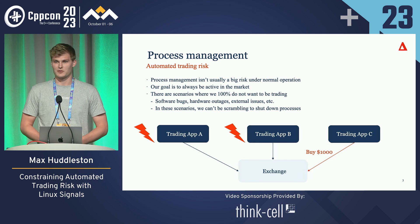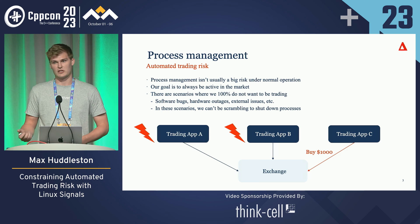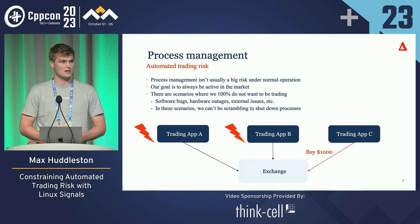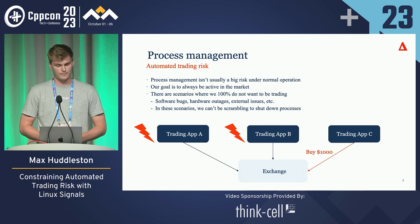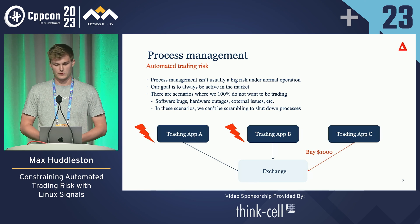That being said, there are scenarios where we definitely 100% do not want to be in the market. These are pretty rare, but they do come up. There could be a software bug in one of our processes causing us to make bad orders and bad trades. It could also be due to a hardware issue — maybe one of our core switches goes down — or external issues where the exchange is exhibiting some behavior we're not comfortable with and we want to pull all of our auto traders and get out of the market. In these scenarios, we can't be scrambling around even for minutes, because if there is an auto trader making very bad trading decisions, it has a huge impact and we need to stop trading as soon as possible.